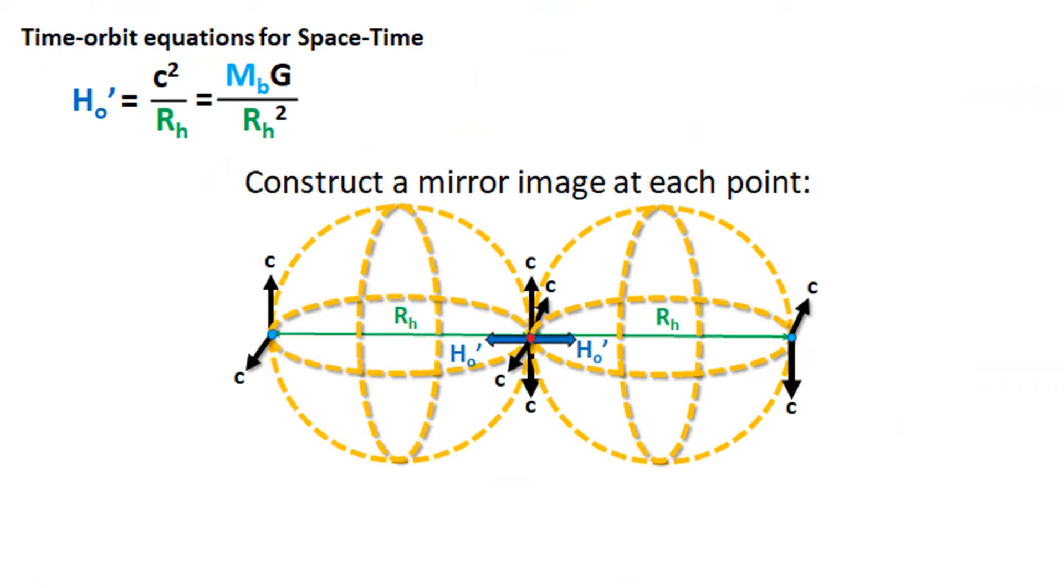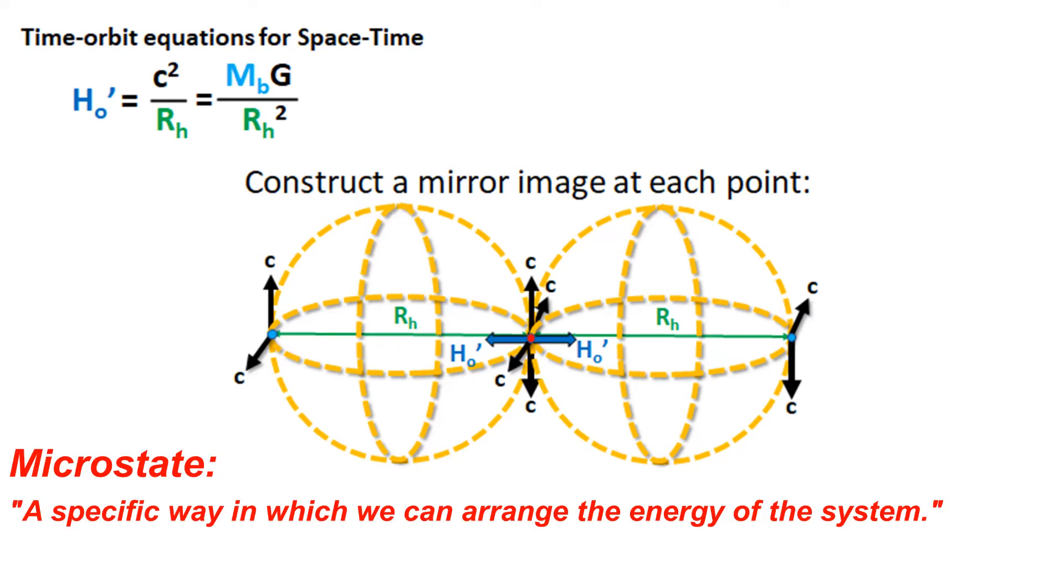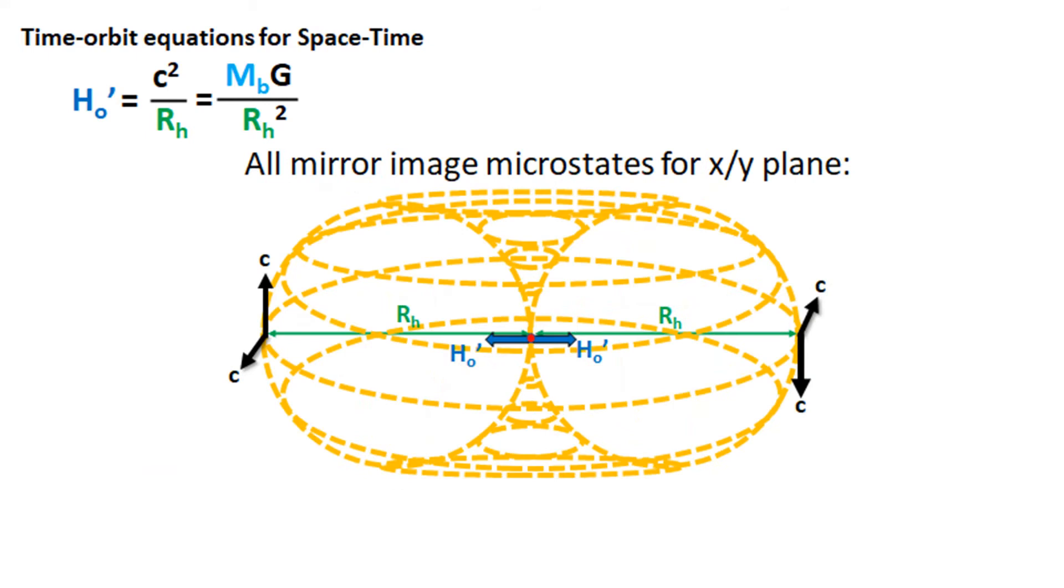Next, since directional motion is arbitrary for quantum systems with no external reference, we can say that every point on the orbital surface can be adjacent to a mirror image orbital, where its directional orbital velocity microstate is equivalent. Filling in all mirror image microstates in a plane around a point on the surface creates a torus structure.